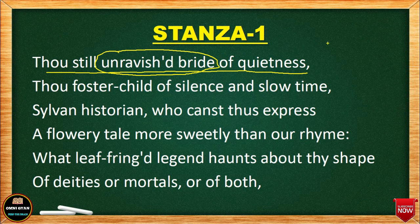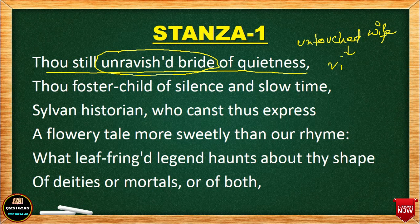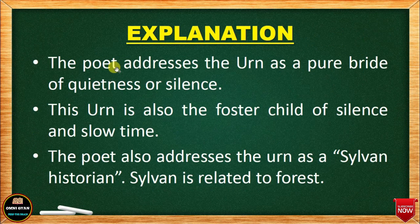'Unravished bride' — bride means a newly wed girl, and 'unravished' means untouched. So Keats, looking at this urn, is saying this urn is an untouched wife — a wife who has not been touched. This urn is compared to a virgin girl, a girl who has not been touched by a man. So the poet addresses the urn as a pure bride — a bride who has not been touched.